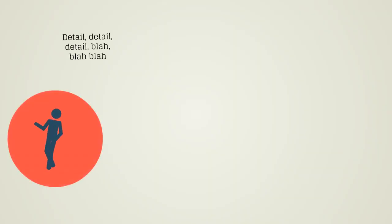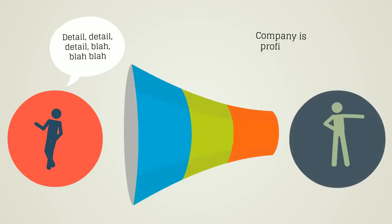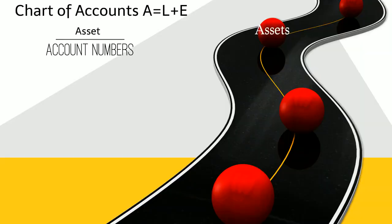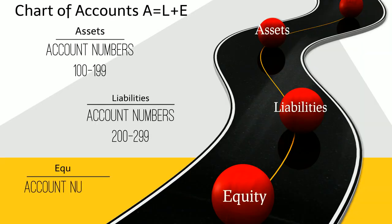When financial data is communicated, it has to be consolidated into meaningful, readable information for those needing it. The chart of accounts is the map for financial information. The account numbers align with the accounting equation, giving you the direction where entries should go.